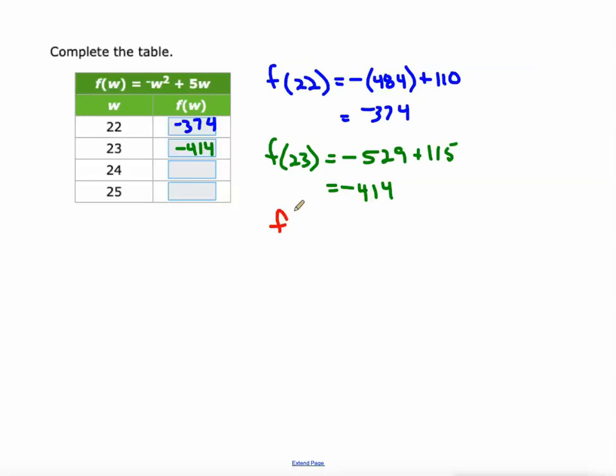F at 24. Well it's gonna be the opposite of 24 squared, and 24 squared is 576, plus 5 times 24. 5 times 24 is 120. Yep. So when you add those you get negative 456.